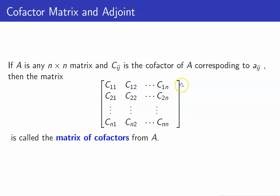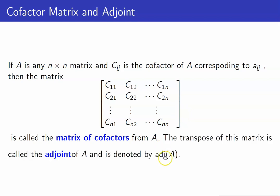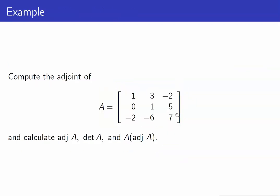If we get the transpose of this matrix, we define that to be the adjoint of A. Remember, the adjoint of A is the transpose of the matrix of cofactors.